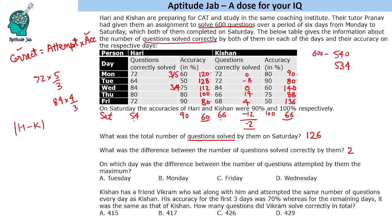Next question: on which day was the difference between the number of questions attempted by them the maximum? Options are Tuesday, Monday, Friday, and Wednesday. Looking at the attempt differences: 30 on one day, 48, 28, and 56 — the difference is highest on Friday, so Friday is the answer.